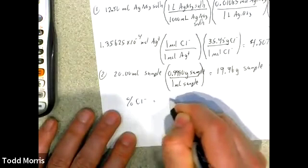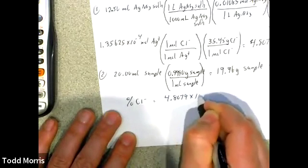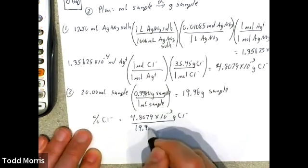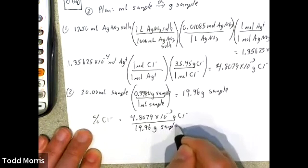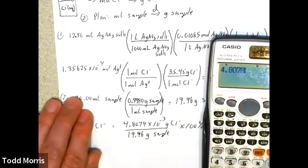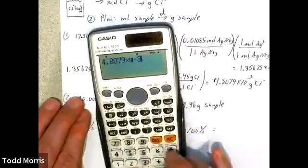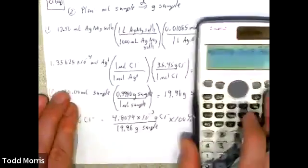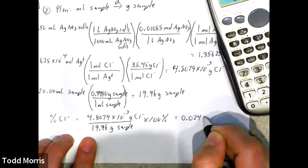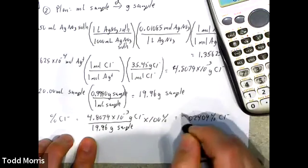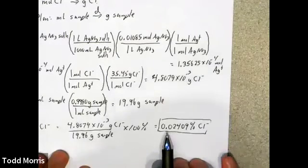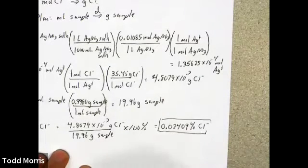Finally, percent chloride is my 4.8079 × 10⁻³ grams of chloride divided by 19.96 grams of sample, times 100%. This gives a final answer of about 0.0249% chloride. This means that according to my experimental results, about 0.024% of the total mass of the tap water sample is due to chloride ions present in that sample.